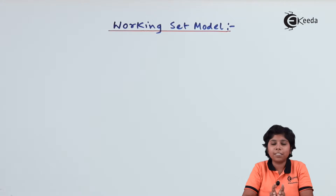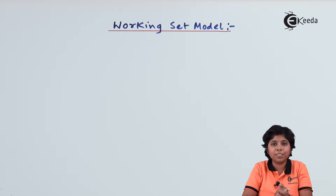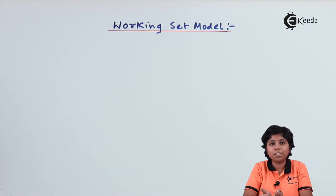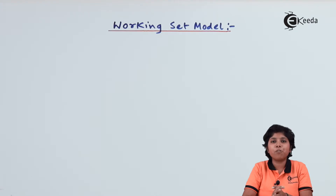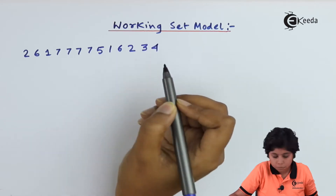Whenever an active page is in use, it is said to be in the working set of that particular system. The idea is to examine the most recent delta references of pages. Pages that belong to this delta of references belong to the working set. If a page is not in the most recent delta references, it is not in the working set.